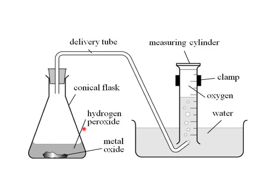Hydrogen peroxide breaks down into water, H₂O, and oxygen, O₂, which can be collected as bubbles in a measuring cylinder or a gas syringe. We can use various metal oxides to see which one acts best as a catalyst.